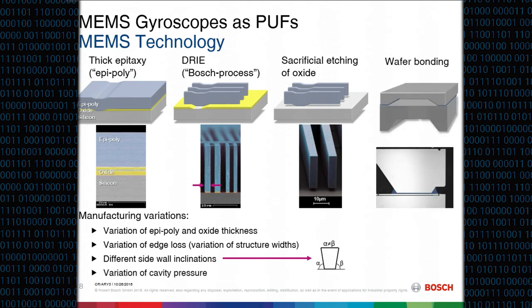The third major step near the end of the process is wafer bonding, where a second wafer is bonded to the wafer with the main structure. For gyroscopes this is typically done in vacuum at a few millibar, and the process pressure varies, resulting in different cavity pressures across different sensors. There are also other dependencies such as outgassing processes dependent on the quality of the bond connection.